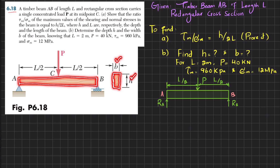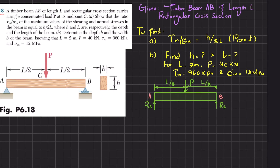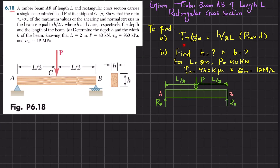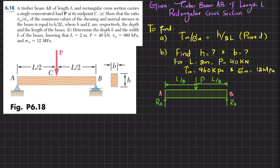There is a concentrated load at point C, and the total length of the beam is L. In part B, find H and B if L is 2 meters and P is 40 kilonewtons. First step: remove the supports at the end. There will be reaction forces RA and RB.